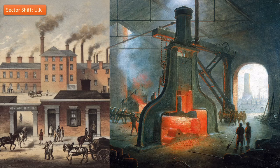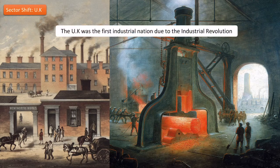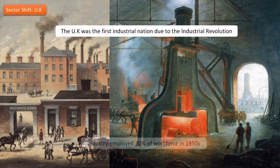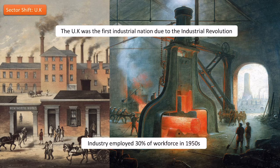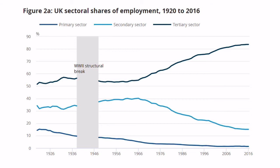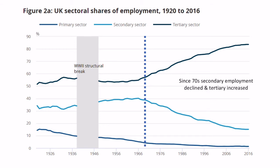A brief background: the UK was one of the first industrial countries because it had an industrial revolution, which started to really kick in after about 1770. By the time we get to the 1950s, industry is well established and employs about 30 percent of the workforce. However, by the 1970s we start to see a sector shift, where secondary employment in industry declines and services start to increase.